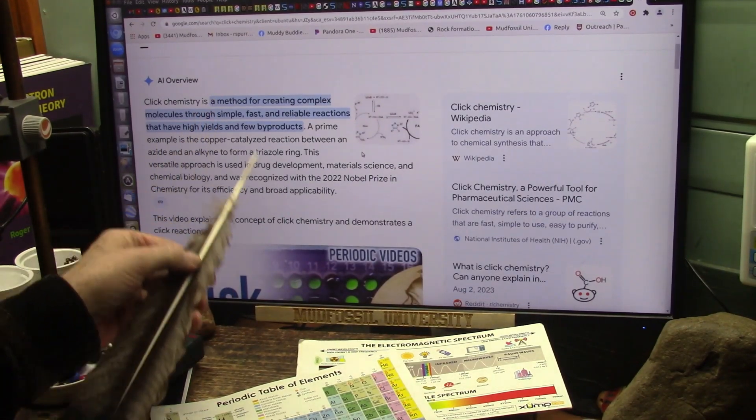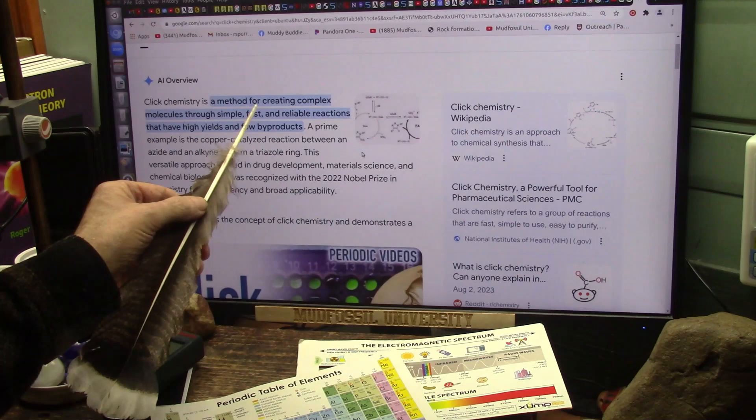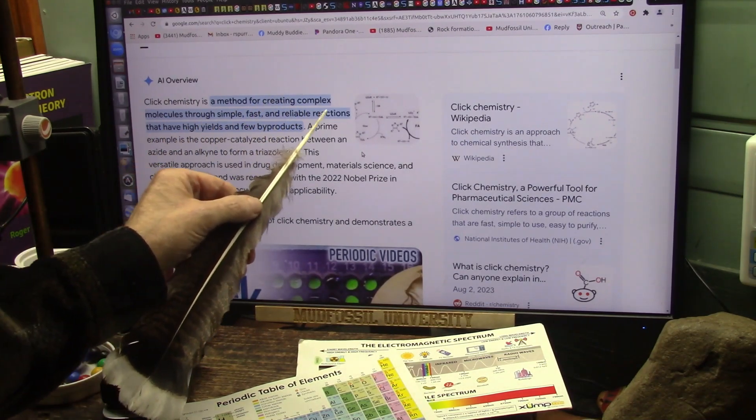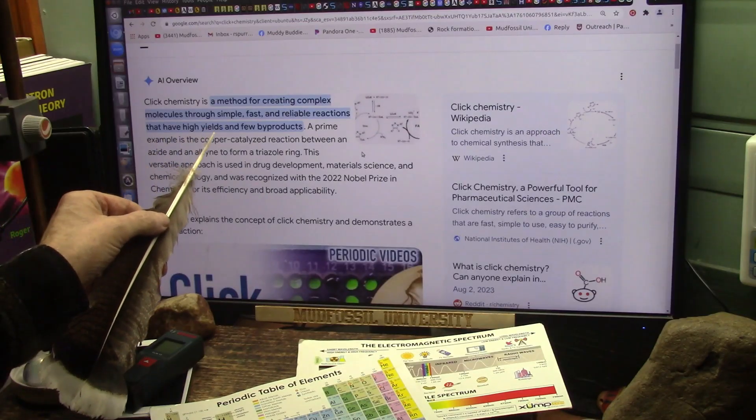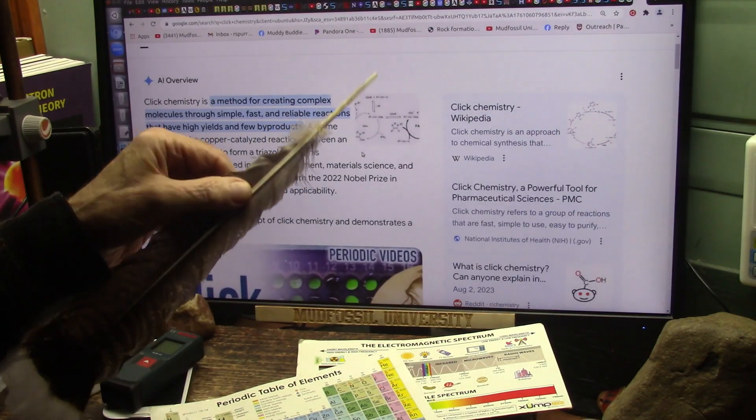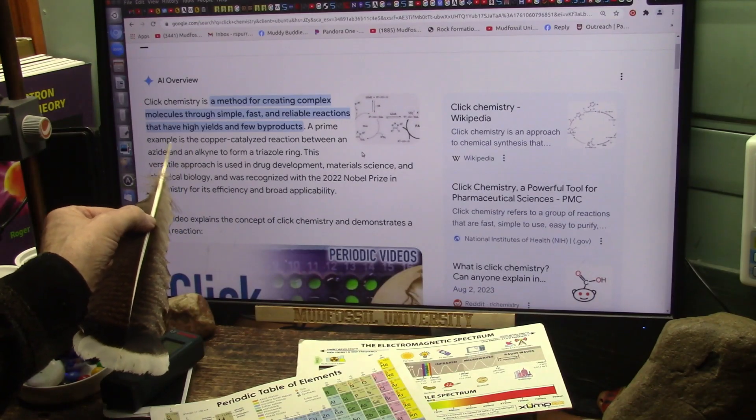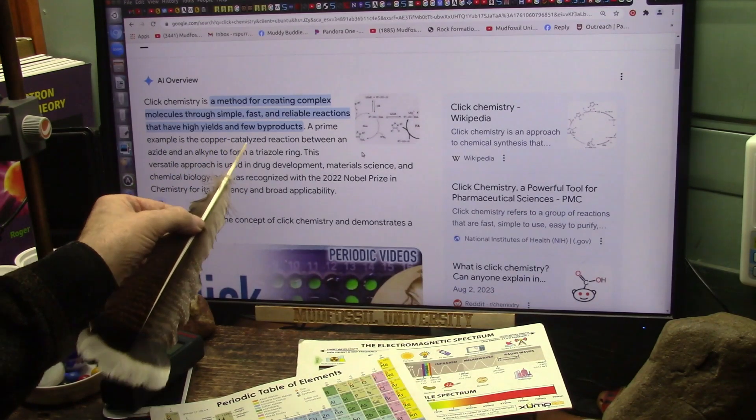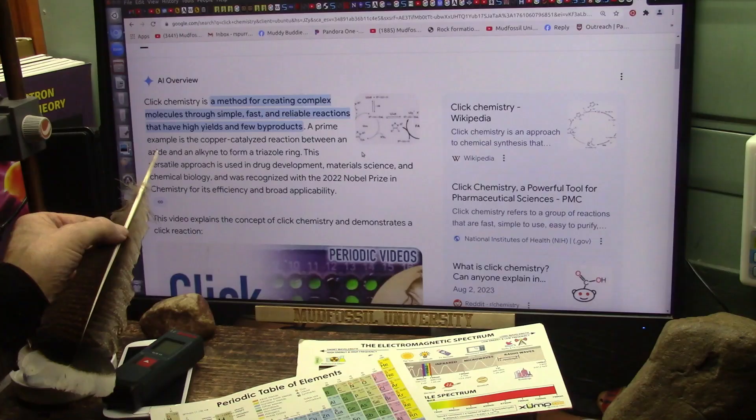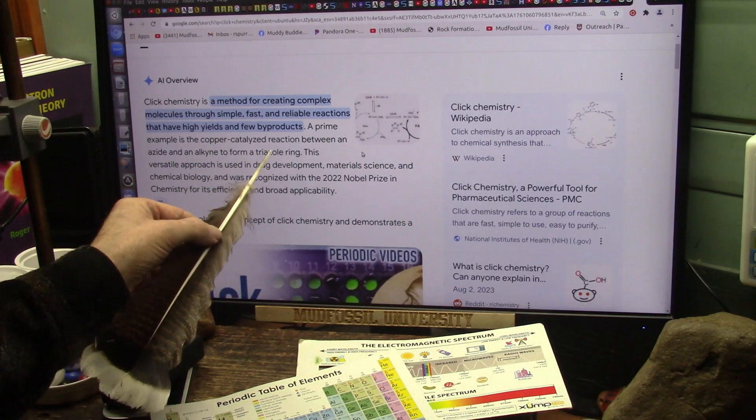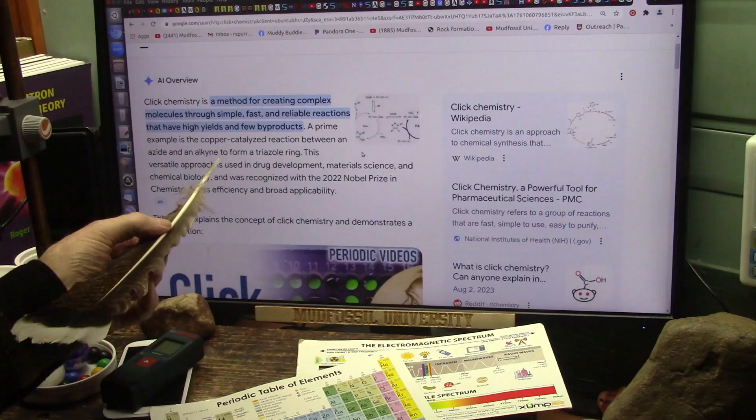And it's a method for creating complex molecules through simple, fast, reliable reactions that have high yields and few byproducts. That's catalyzed. You see, this example is a copper-catalyzed reaction between an azide and an alkyne to form a triazole ring. It's an enzyme.